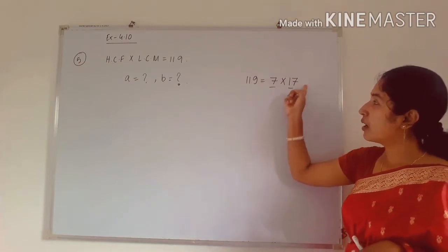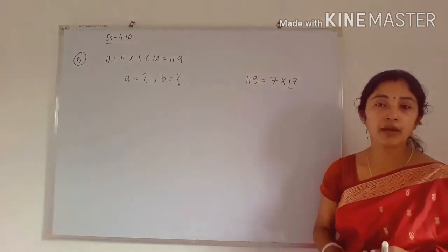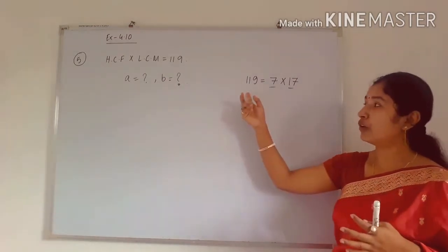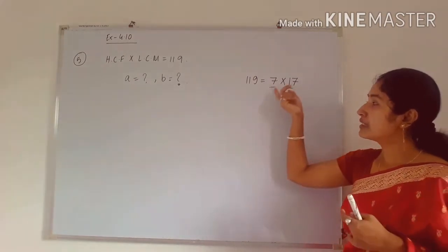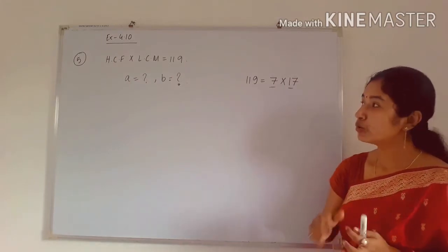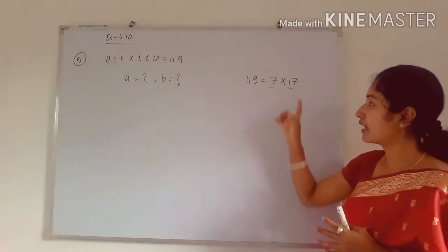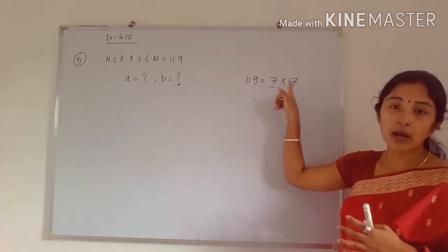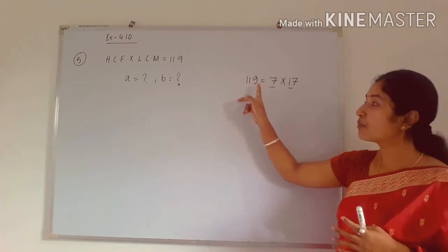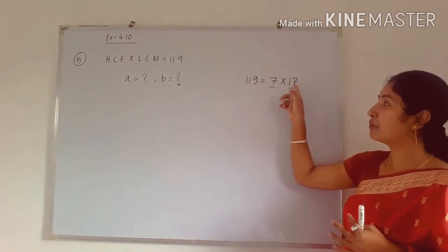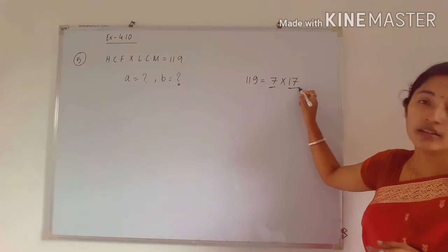By finding the prime factorization, we can see there are only two numbers, and those are prime numbers. 7 and 17 are prime numbers — when we multiply them we get 119. So the two numbers A and B are 7 and 17 respectively, whose product of HCF and LCM is 119. Apart from these two numbers, no other pair multiplies to give 119, so using prime factorization we can find the answer.